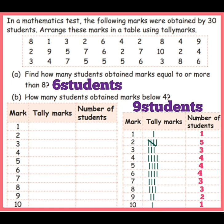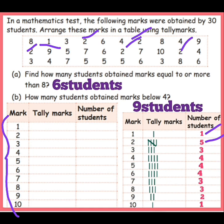So we draw the tally mark. For 2 mark: tally mark 1, 2, 3, 4, 5. So 5 students scored 2 marks. For 3 mark: 1, 2, 3 students. For 4 mark: 1, 2, 3, 4. Next for 5 mark: 1, 2, 3, 4. So 4 students scored 5 marks.